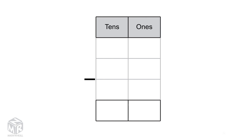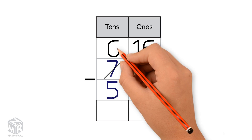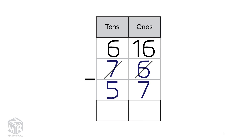Let's try another example: 76 minus 57. Pause this video and try to solve it on your own. We can't subtract 7 from 6, so we regroup one 10 as 10 1s. Now we have 16 1s. We also have 6 10s. Now we subtract the 1s: 16 minus 7 equals 9.